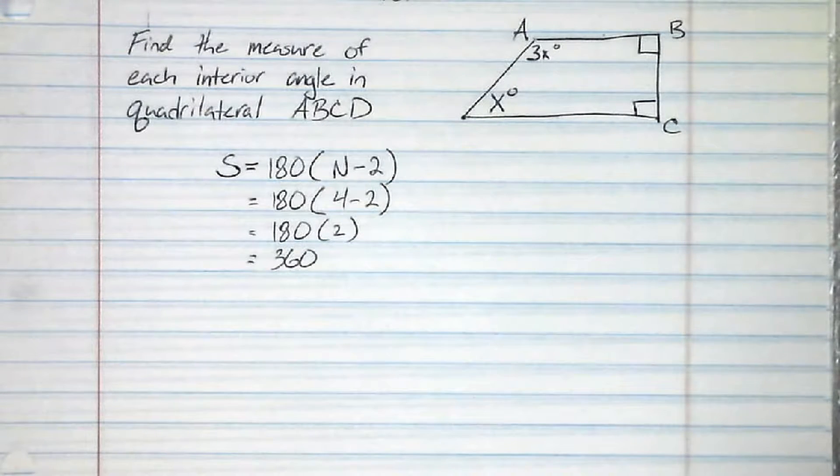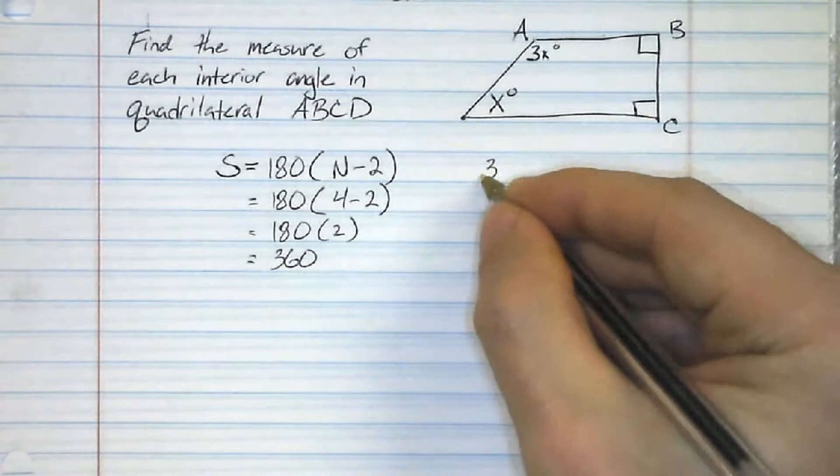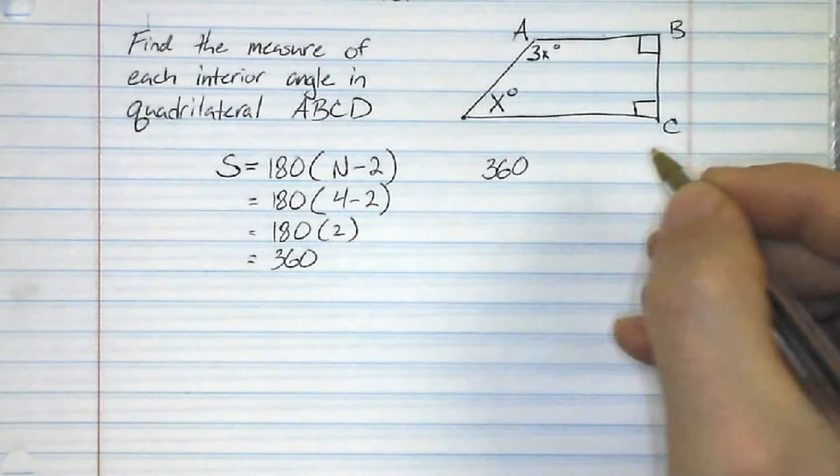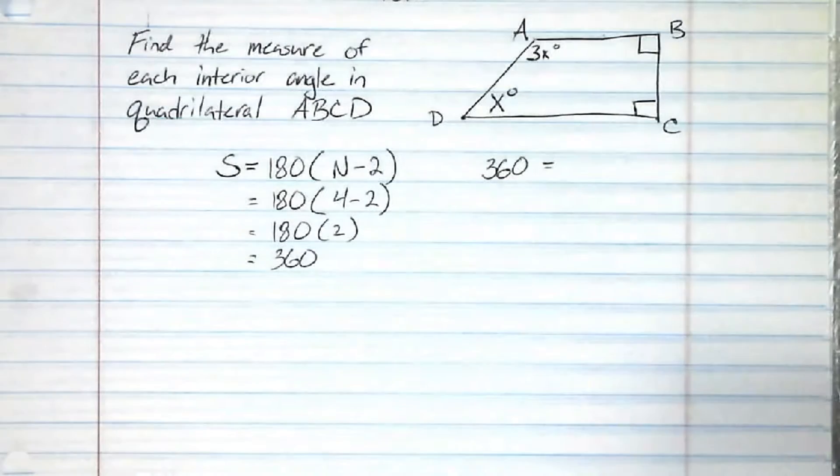And now we're going to solve this just like we used to solve the missing angle problems with triangles, where we would say 180 equals, and then write down the three angles. We're going to solve it the same way. We know that they all have a total sum of 360 degrees.